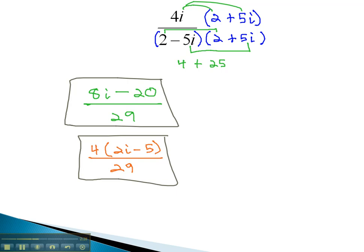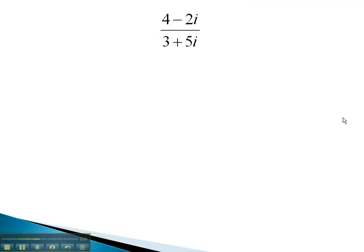Let's take a look at one more example, where we're asked to rationalize the denominator by multiplying by the conjugate. In this problem, we have 3 plus 5i in the denominator. The conjugate would be 3 minus 5i, and this is what we must multiply by in both the numerator and the denominator.